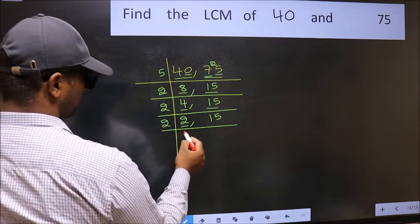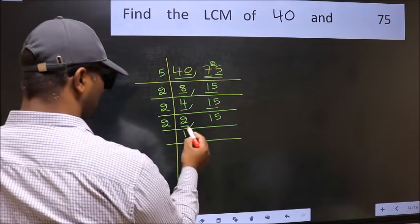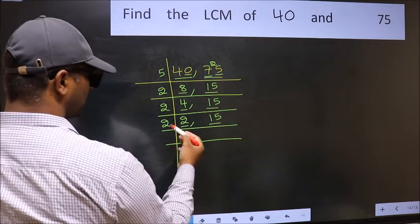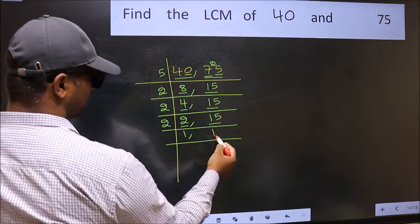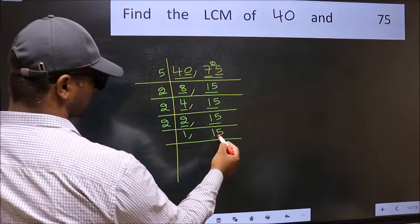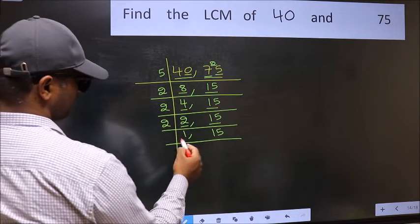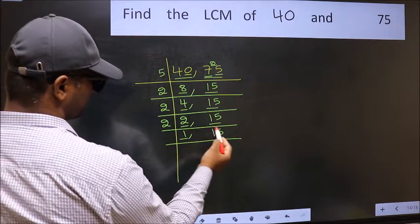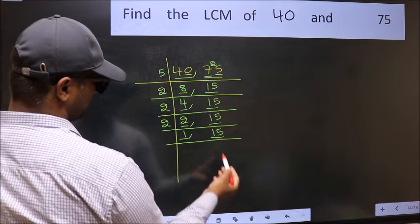Now here we have 2. 2 is a prime number, so 2 times 1 is 2. The other number is 15 — not divisible by 2, so you write it down as it is. Now we got 1 here, so focus on the next number, 15.